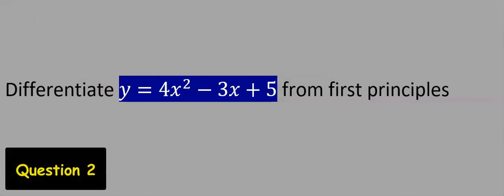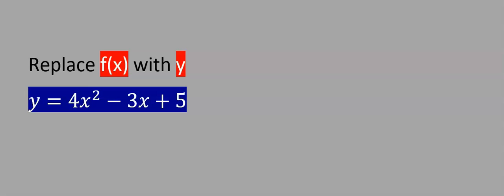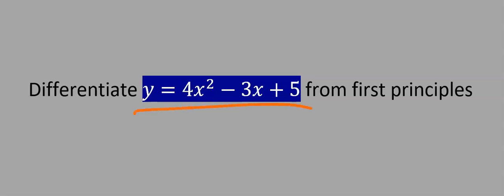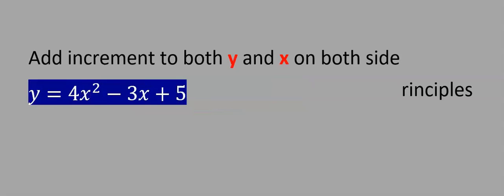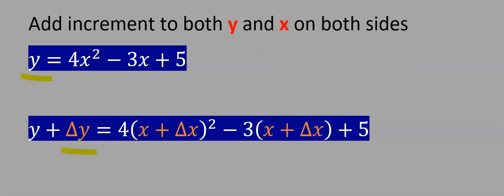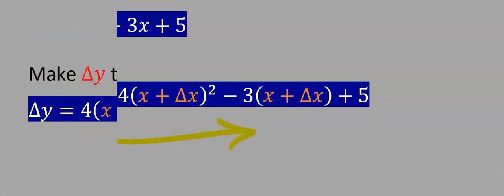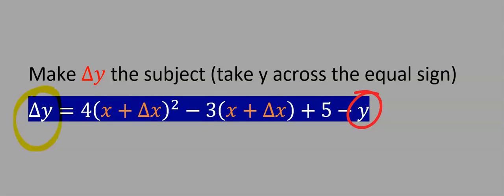Next, differentiate this function from first principles. Step one is to replace f(x) with y; however, from the question we already have y. So the next step is to add increments to both y and x on both sides — add Δy to y, and wherever I see x I will equally add an increment Δx. Next, make Δy the subject by taking y across to the other side, where it becomes minus y.